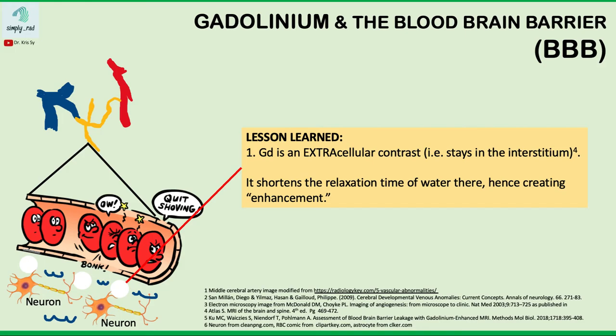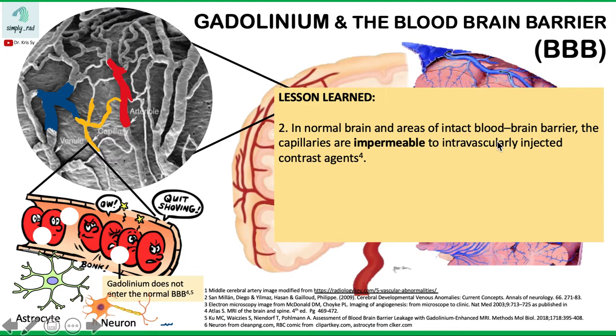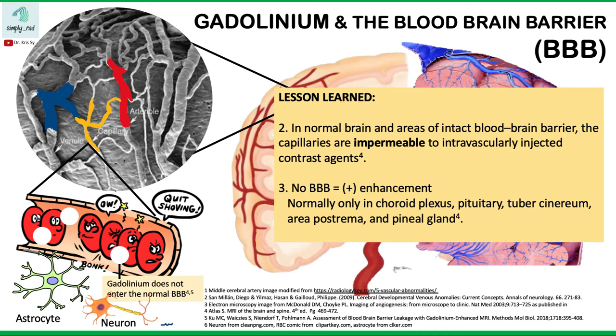In the normal brain, in areas of intact blood-brain barrier, the capillaries are impermeable to intravascularly injected contrast agents. In areas where there is no blood-brain barrier, there will be enhancement. This is normally found in certain structures, including the pituitary gland and the pineal gland — so there is normal post-contrast enhancement in these structures.